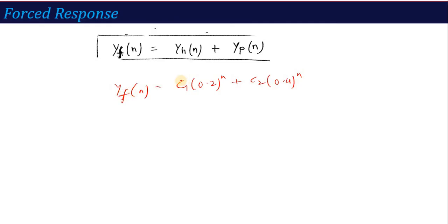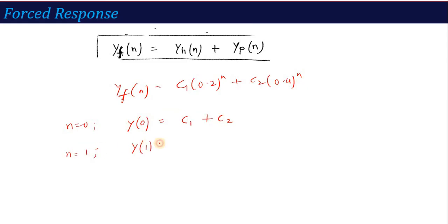The final step remaining is to calculate the values of C₁ and C₂. If I put N = 0 in this equation, I get one equation: Y(0) = C₁ + C₂. And if I put N = 1, I get: Y(1) = 0.2·C₁ + 0.4·C₂. So from here I got two equations. Now, where do we solve for Y(0) and Y(1)? From the given difference equation.